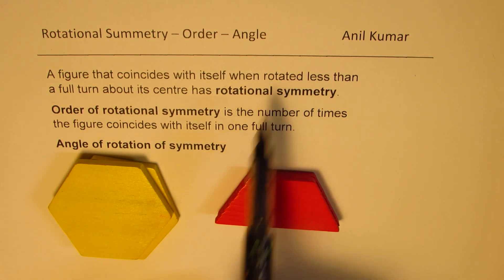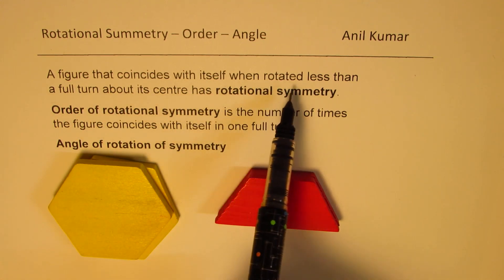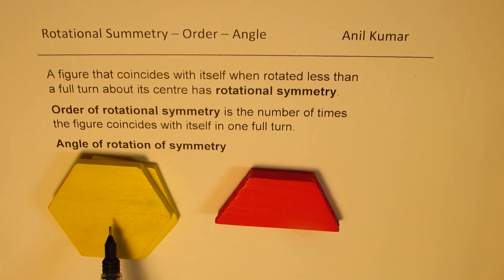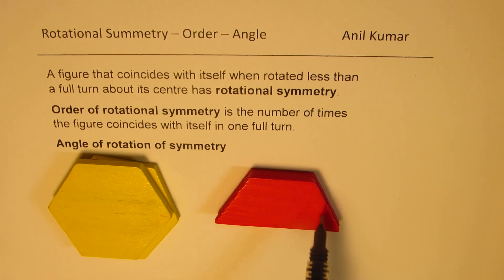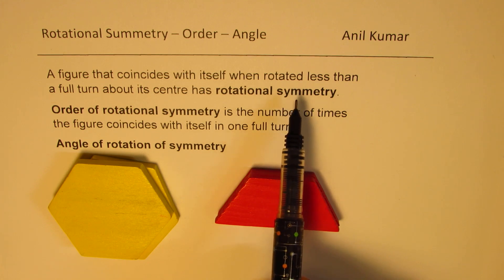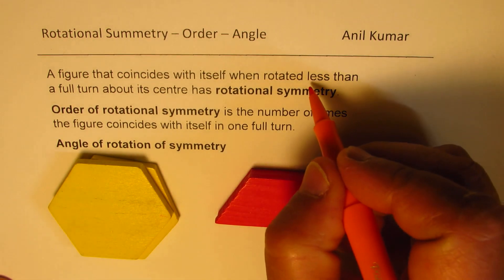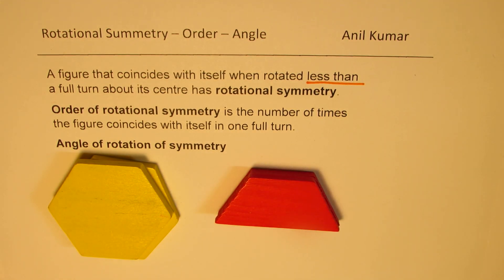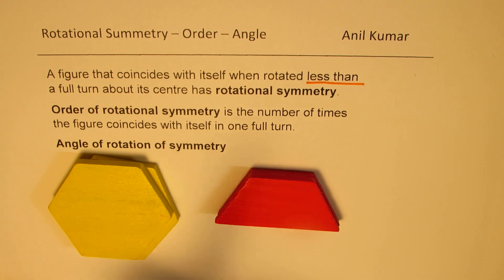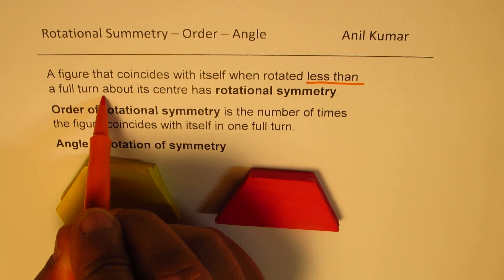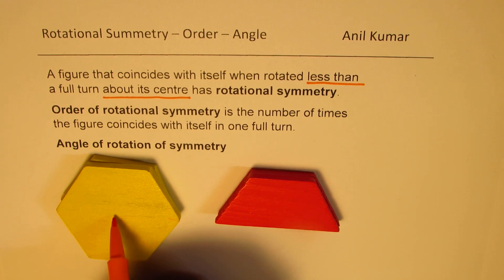Only when I do 360 degrees does it match. Let's look at the definition once again: a figure that coincides with itself when rotated less than a full turn about its center has rotational symmetry. So we will say that hexagon has rotational symmetry, while trapezoid will not, since it only matches itself after a full turn.